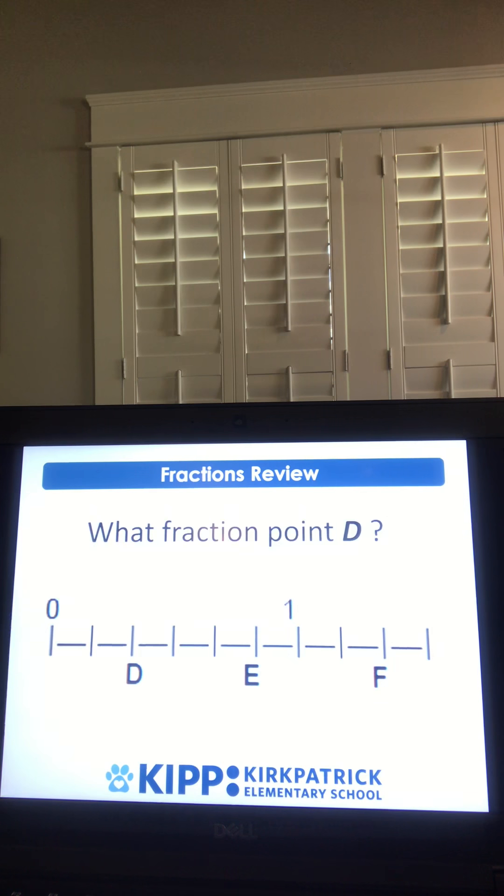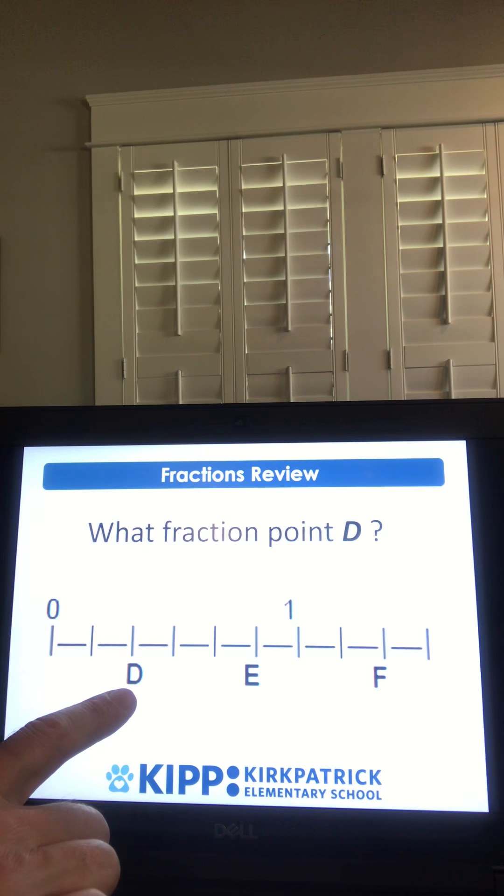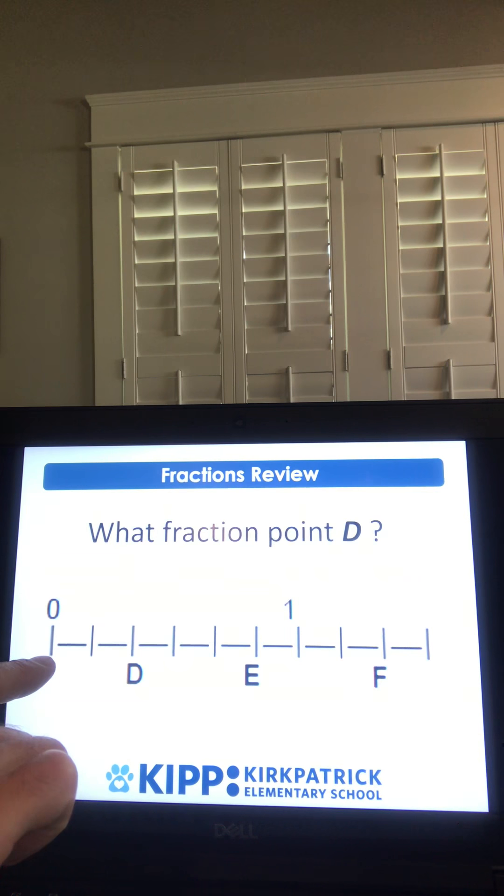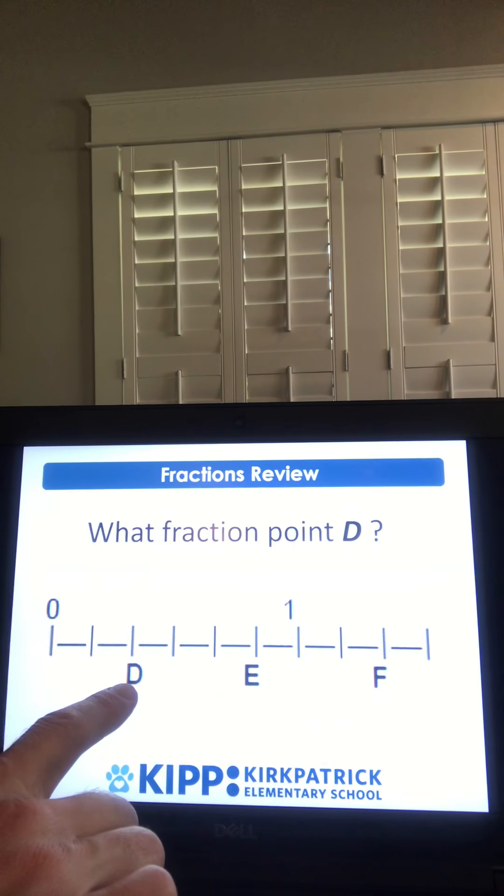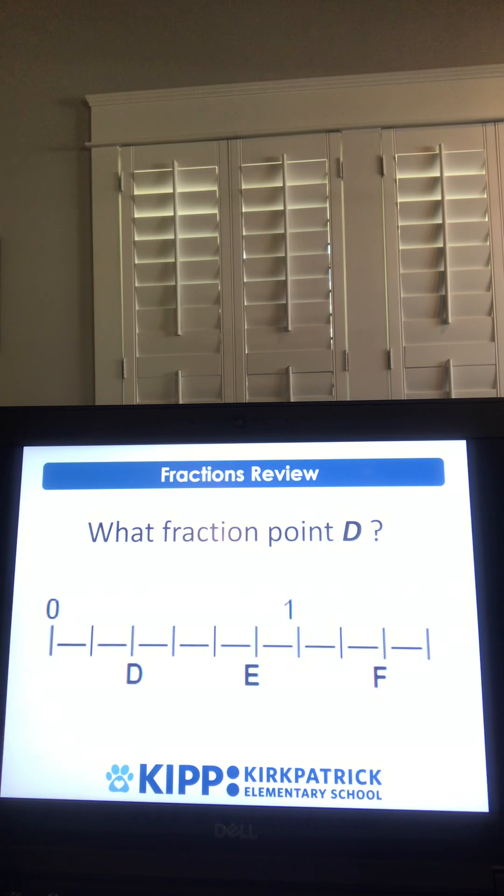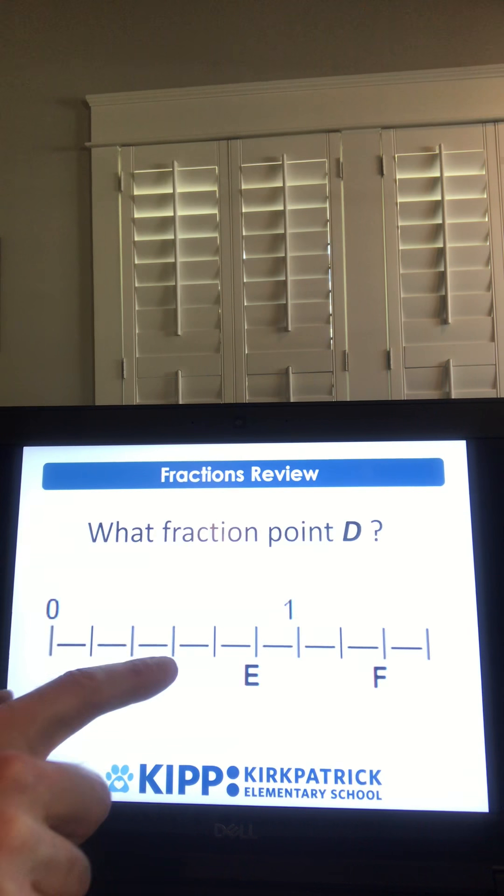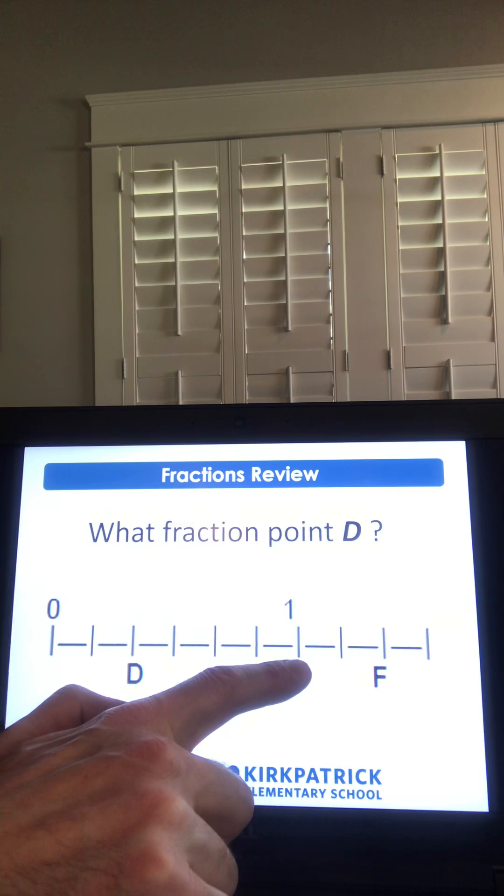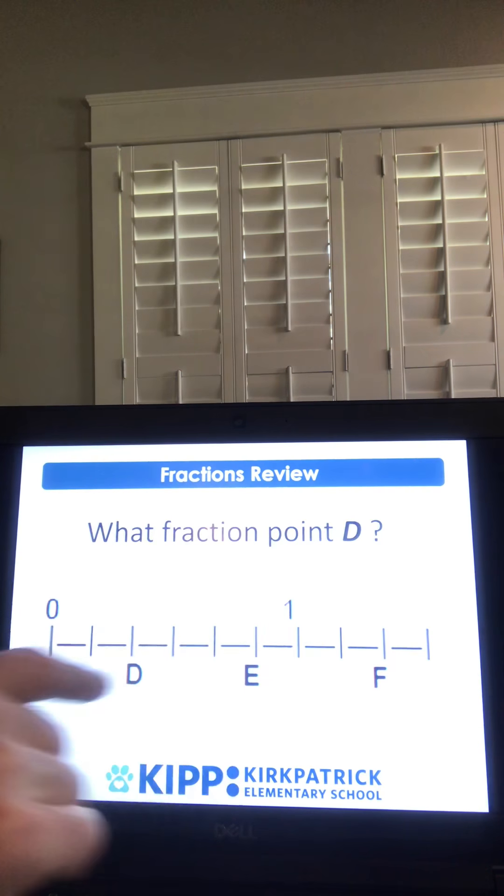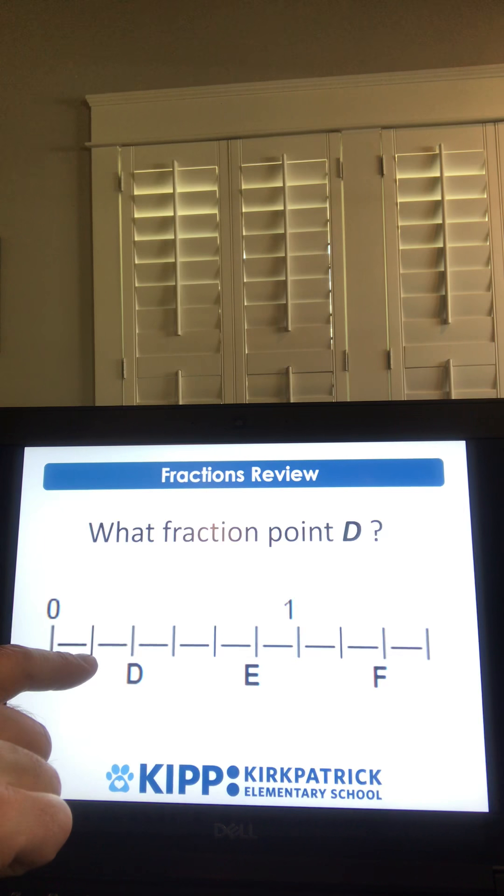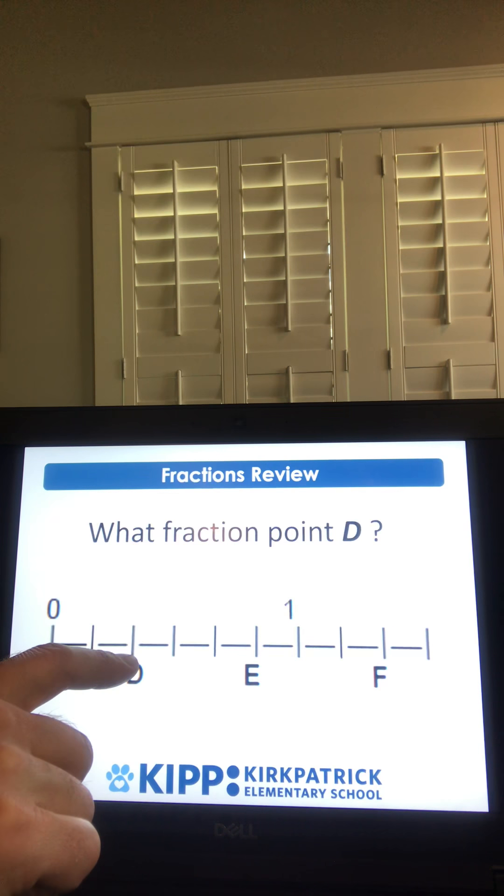Here's our next problem. This is a fraction problem on the number line. So what fraction is point D? There's D right there. And as you're solving this, notice that here is zero, and here is one. So what fraction is point D? To solve this, you need to notice that you have one, two, three, four, five, six equal pieces between zero and one. So our interval is six. So here's one-sixth. D is at two over six, or two-sixths. That would be the fraction for point D.